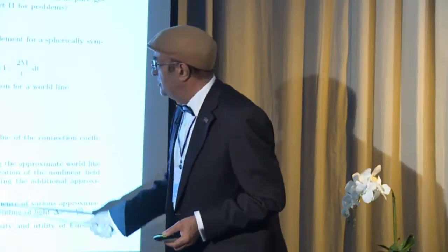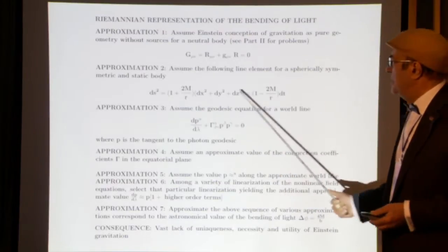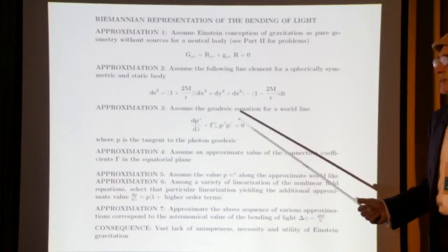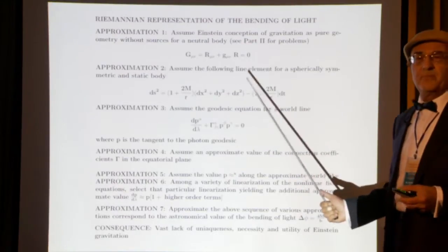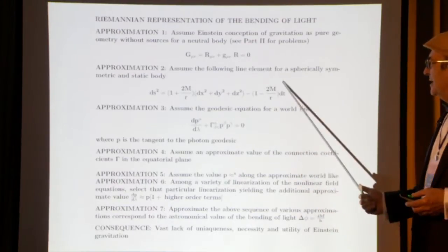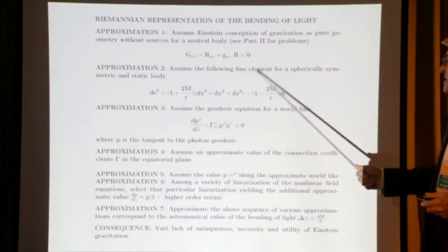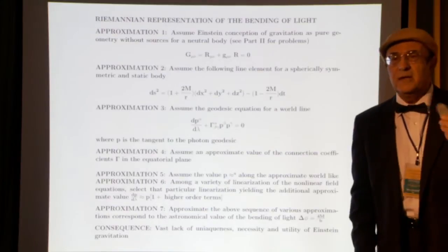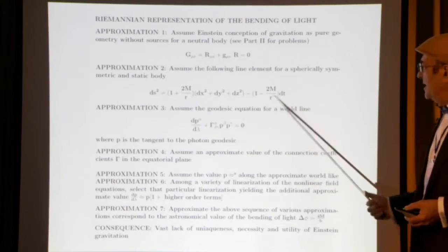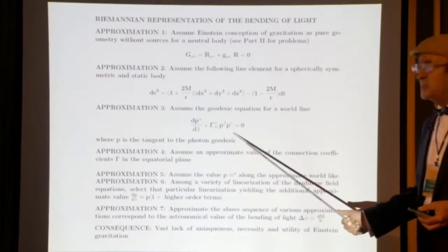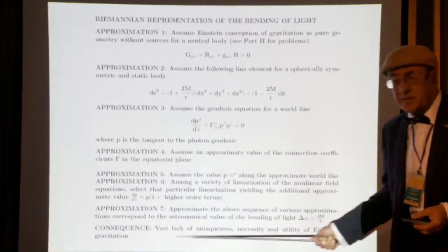Then you have to select a metric from a large variety — this is even in contradiction with the Schwarzschild metric; it's just one selected among many. With covariance, you have an infinite variety of line elements you can select. Then you have to select the geodesic, and then you have to select further elements. After all that, yes, you represent curvature.